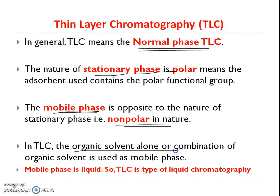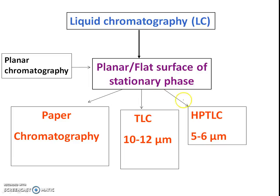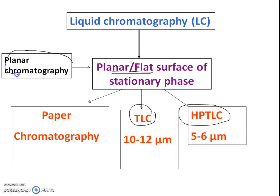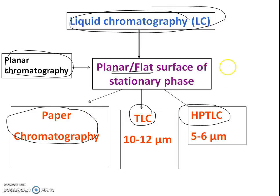The mobile phase, being opposite in nature to the stationary phase, is non-polar. In thin layer chromatography, the mobile phases are organic solvents, used alone or in combination. TLC and HPTLC are both examples of planar chromatography. Paper chromatography, TLC, and HPTLC all use liquid as the mobile phase, and in all three cases the stationary phase is a flat surface.